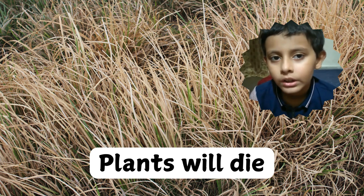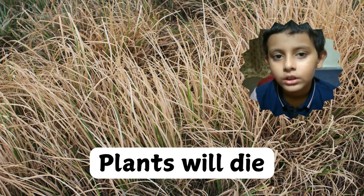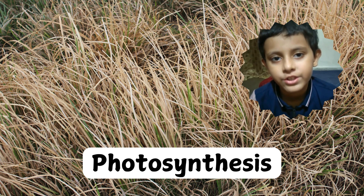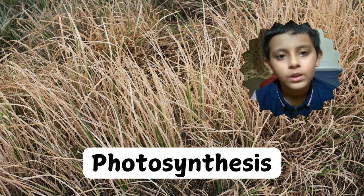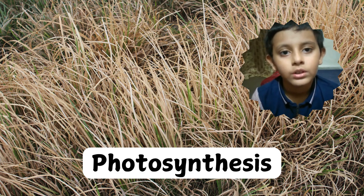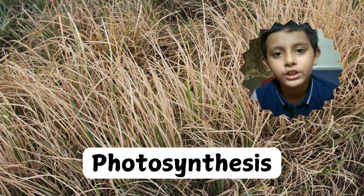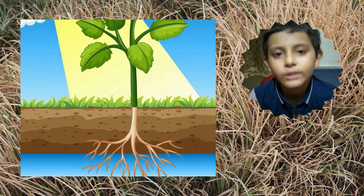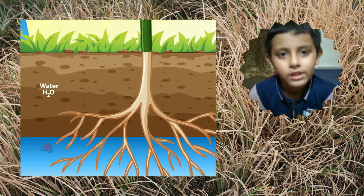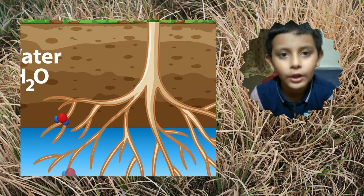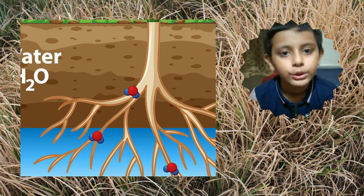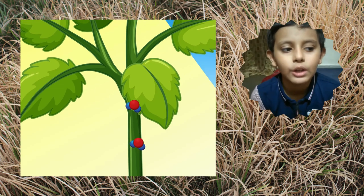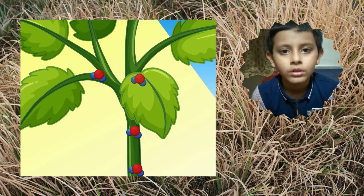Plants will die. Why will plants die? Because without sunlight there will be no photosynthesis. What is photosynthesis? Photosynthesis is the process where plants take in carbon dioxide and produce oxygen. So plants will absorb the carbon dioxide.